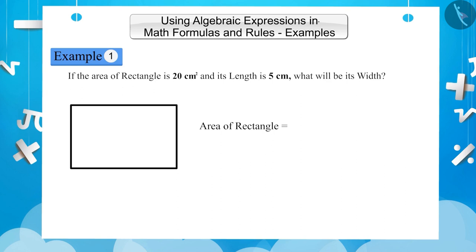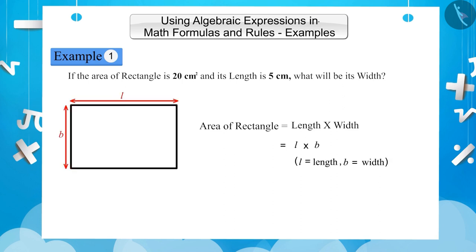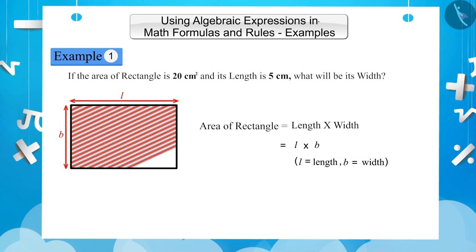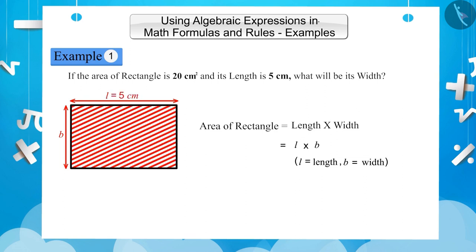The formula for the area of a rectangle is length multiplied by width. If written through an algebraic expression, the area of a rectangle will be l multiplied by b, where l represents length and b represents width. We are given that the area of this rectangle is 20 square centimeters and its length is 5 centimeters. Now we place these values in the formula for the area of the rectangle.